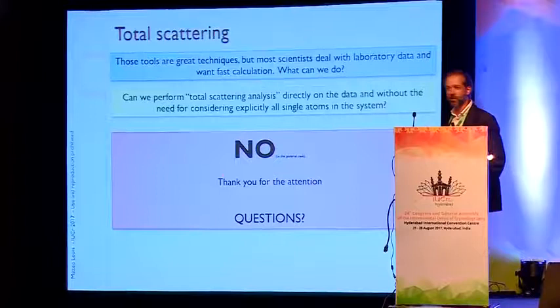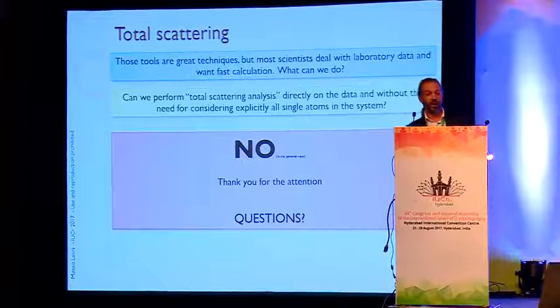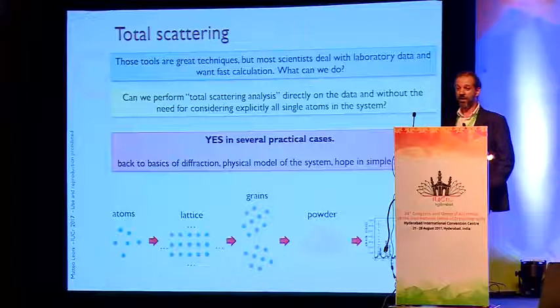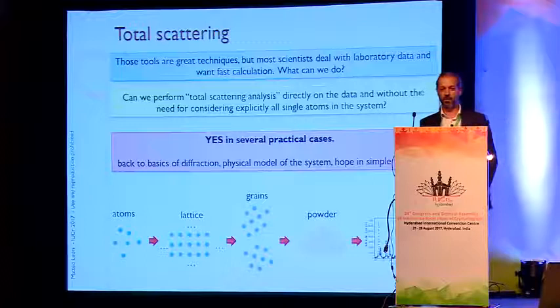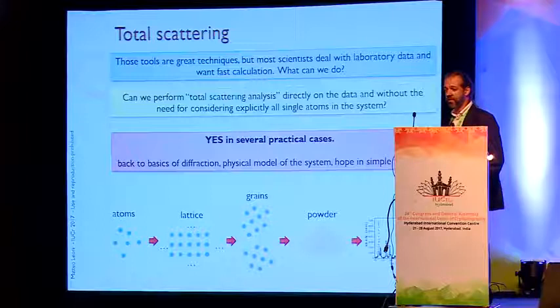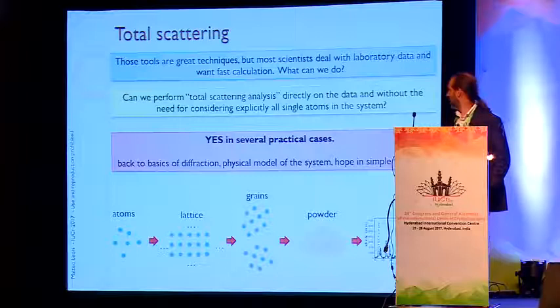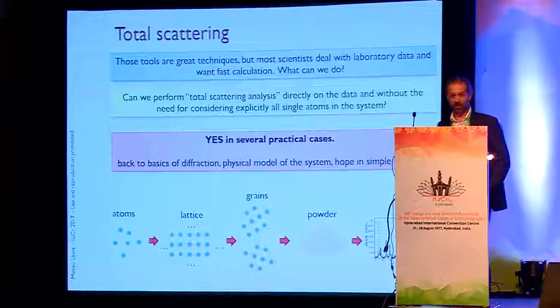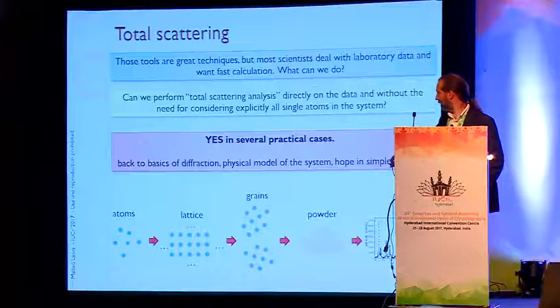Usually, if you read the small print, it gives the right meaning. It's not in the general case, but I would say it could be yes in several practical cases. It doesn't cover everything — we must be honest. But in practical cases, we might be able to get some information. To get this information, we need to see what the physics is behind what we are analyzing: starting from the atom, building up a lattice, getting the grains containing that lattice, getting a powder diffraction pattern, and then working our way back along the chain. Because in the end, this is what we measure, and we would like to have information about each single atom. It's not an easy job.